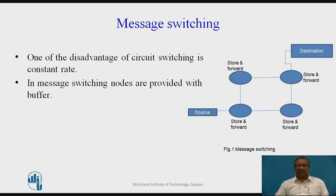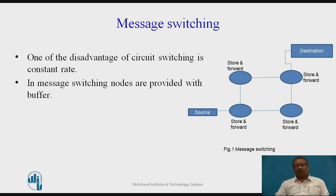As discussed in the previous lecture, one of the disadvantages of circuit switching is constant rate of data transfer. This is a disadvantage because nowadays the nature of data to be transmitted is bursty, and this type of bursty data transfer is not possible with the circuit switching method.